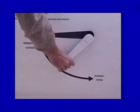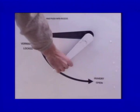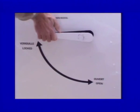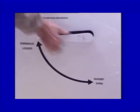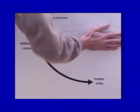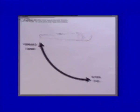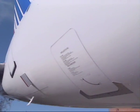Pull the bulk door closed and lock it by setting the external handle to the locked position. After operation from the outside, push the external handle into its recess again.